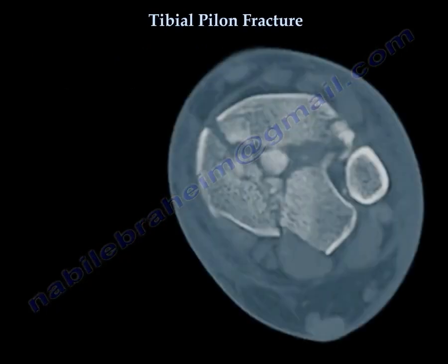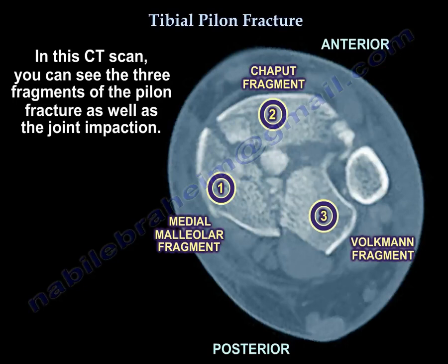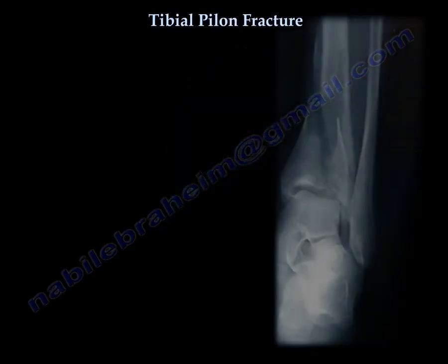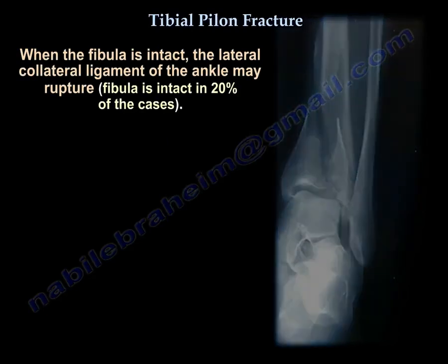In this CT scan you can see the three fragments of the pylon fracture and also the joint impaction. When the fibula is intact, the lateral collateral ligament of the ankle may rupture.